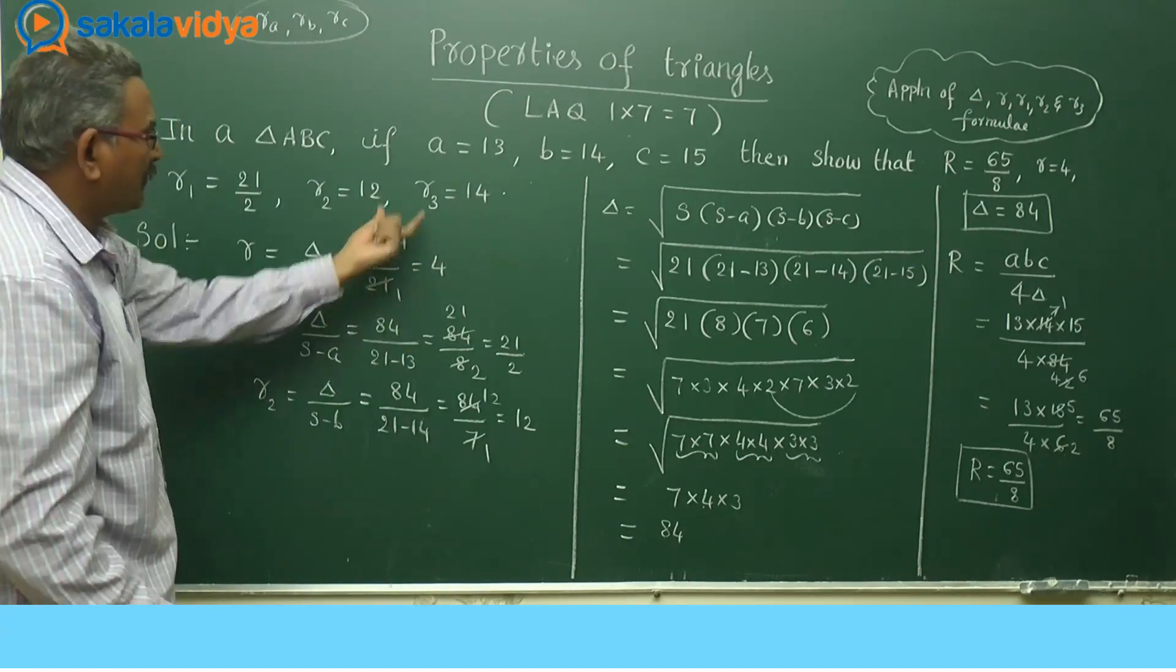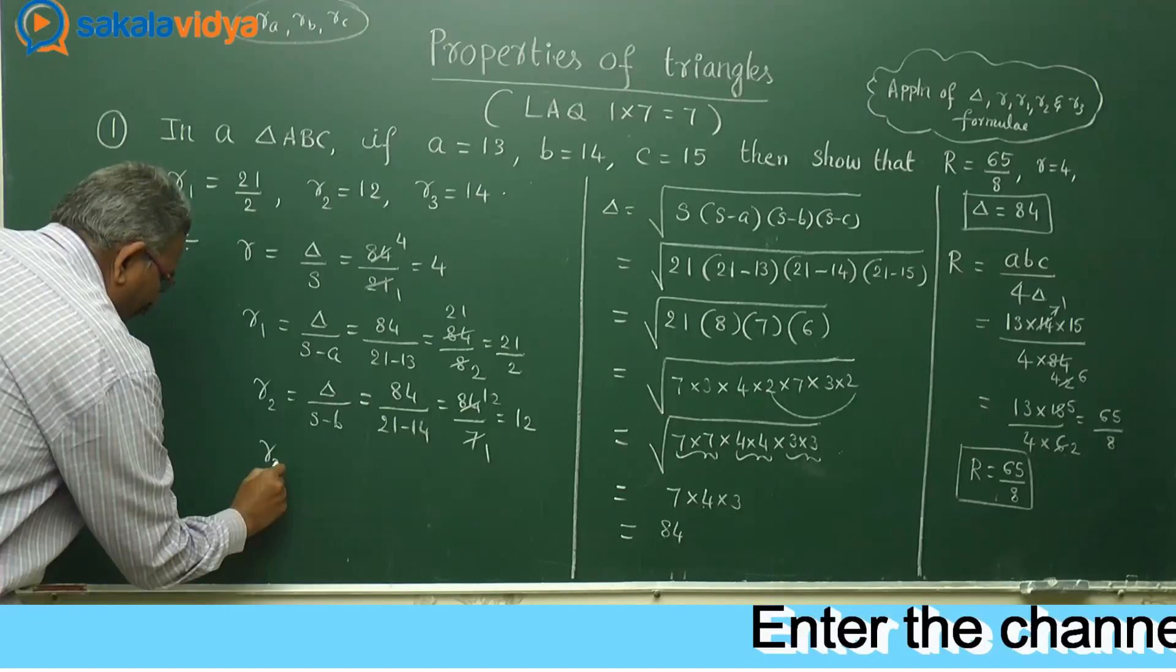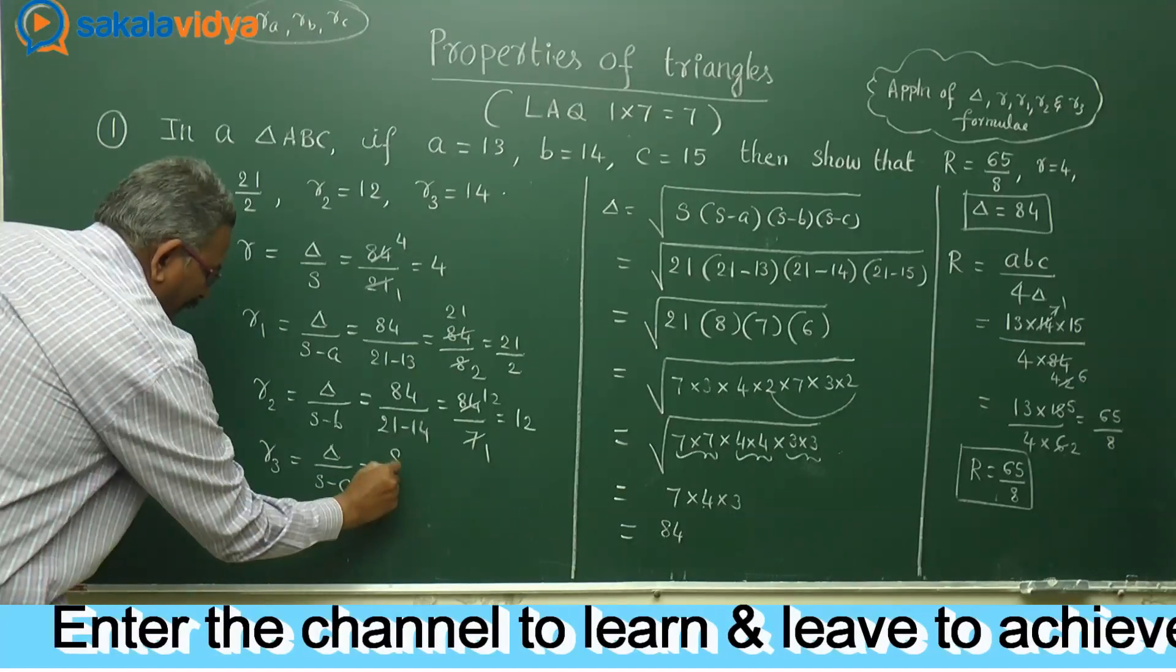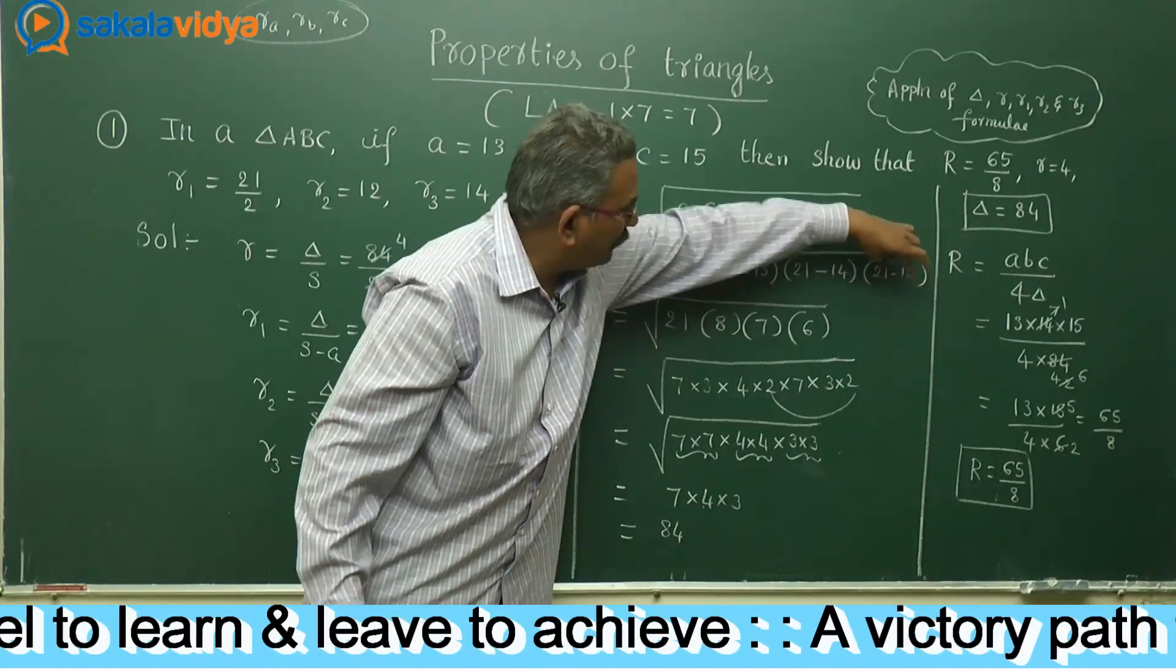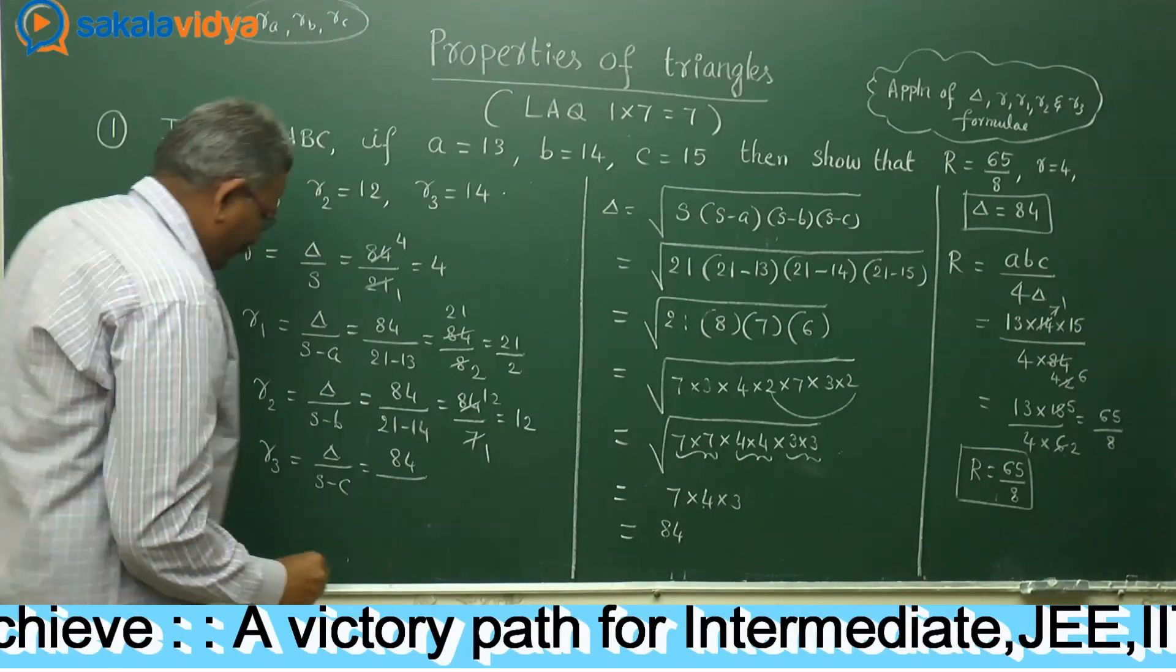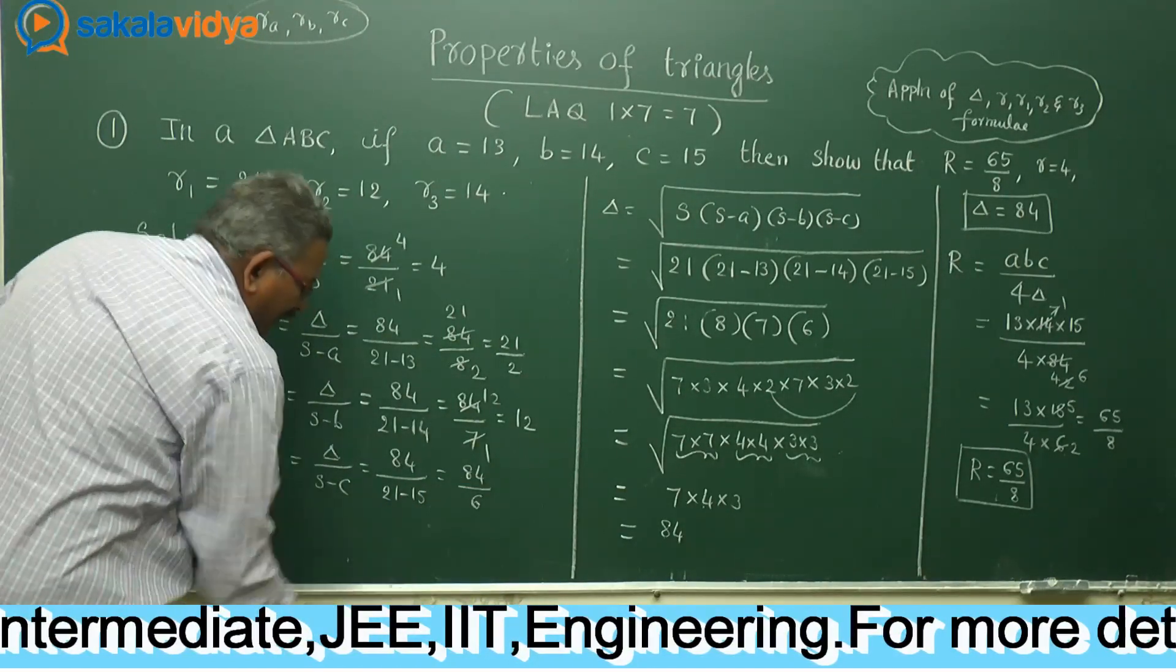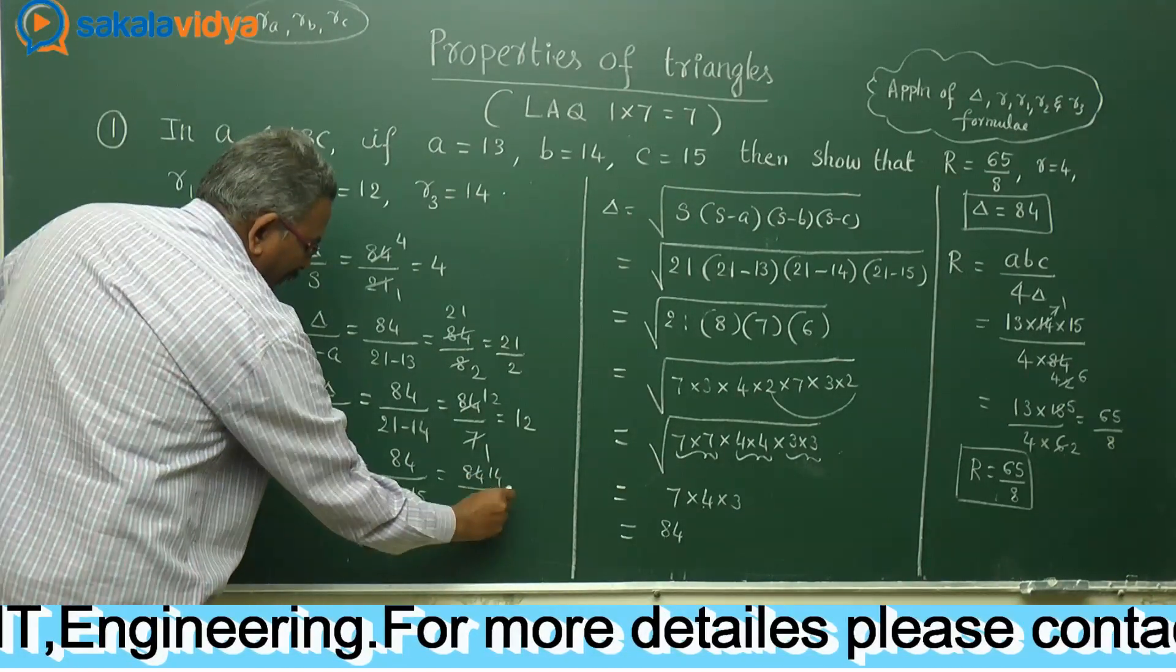Only at last we have to find out R3 value. R3 is equal to RC, that is delta by S minus C. Delta is 84. S minus C, the value is 21 minus 15, where S is 21, C is 15. 84 divided by 6. 6, 1, 6, 14. So R3 is 14.